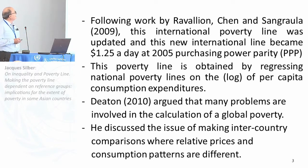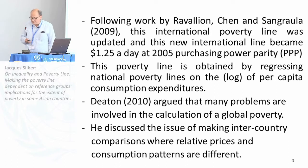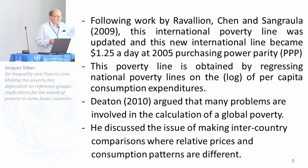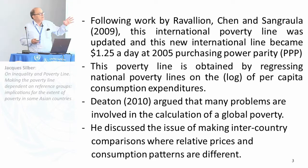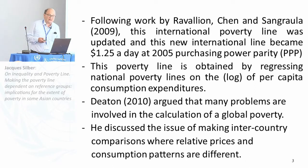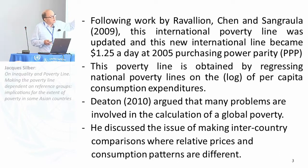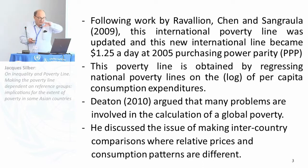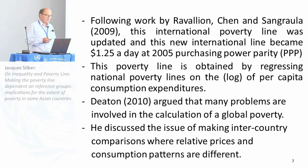A few years later, other work by Martin Ravallion, Chen, and Sangrola decided the absolute poverty line should be one dollar twenty-five. How did they get to one dollar or dollar twenty-five? They took the national poverty line in various relatively poor countries, using a purchasing power parity exchange rate, and regressed it on the log of per capita expenditure. They got a regression line that was flat up to some level of per capita expenditure and then rising — at the flat point, that gave them the idea of the poverty line.